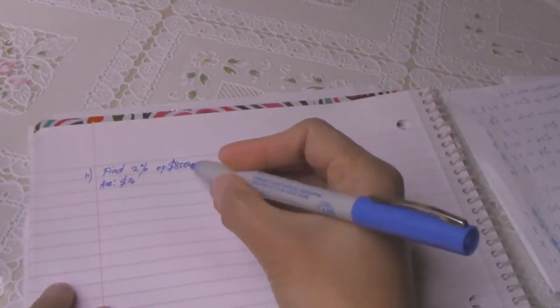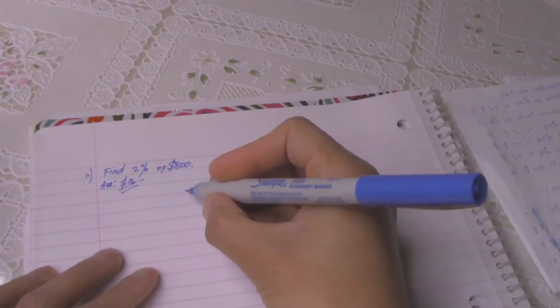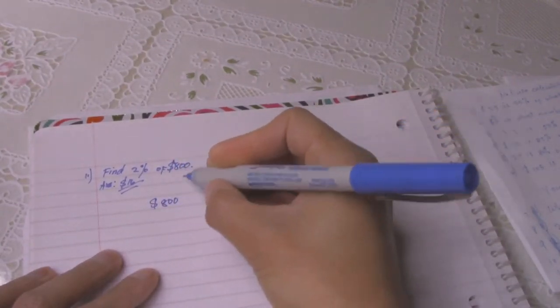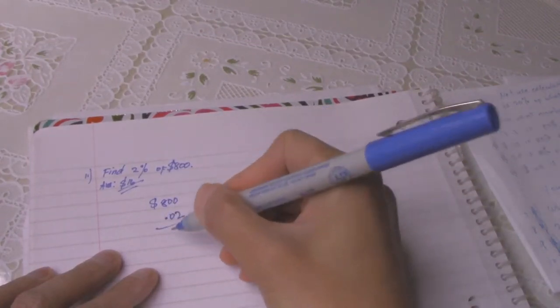Number 11: find 2 percent of 800. Answer is 16. So you will write 800 times 0.02, the answer is 16 dollars.